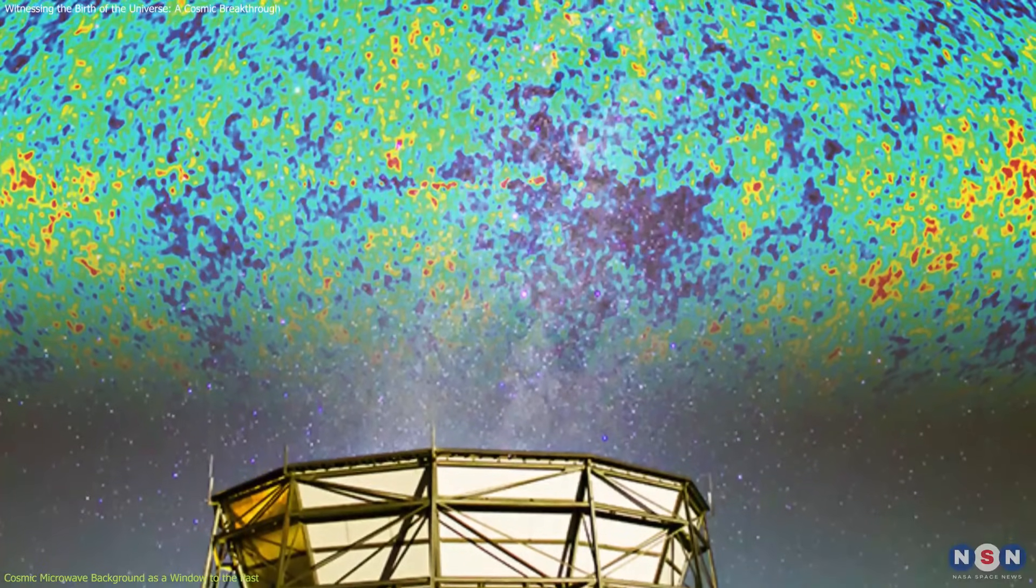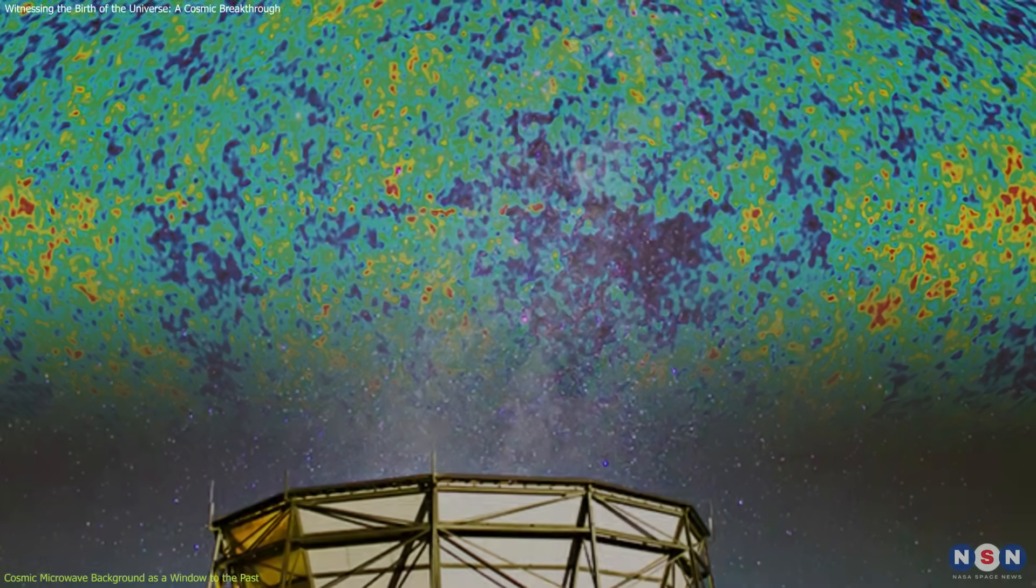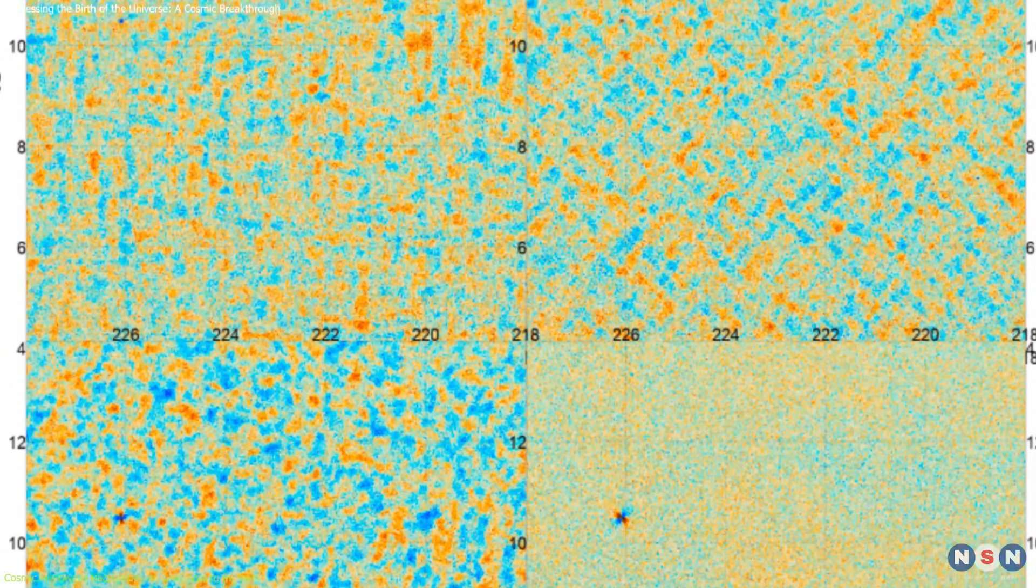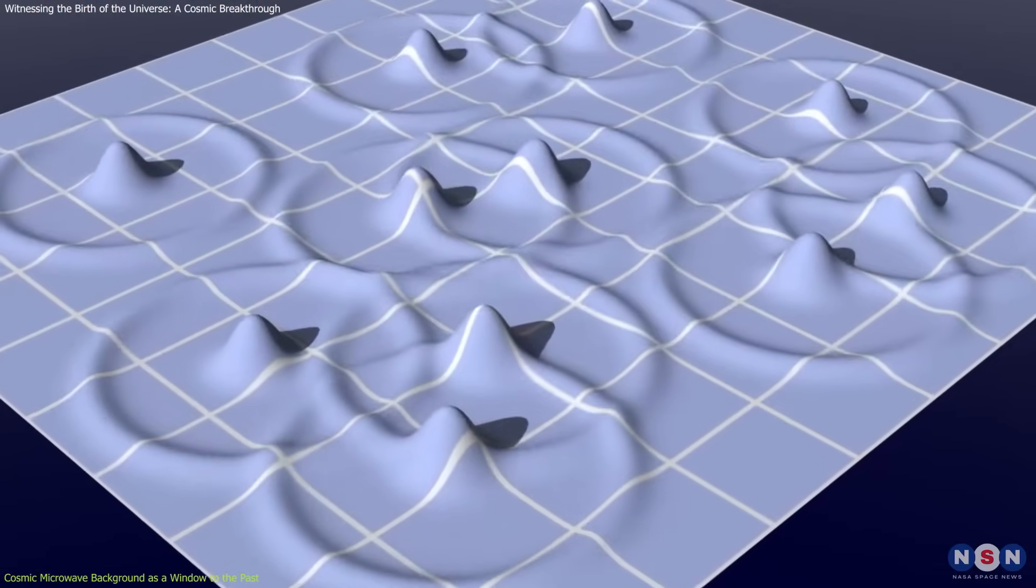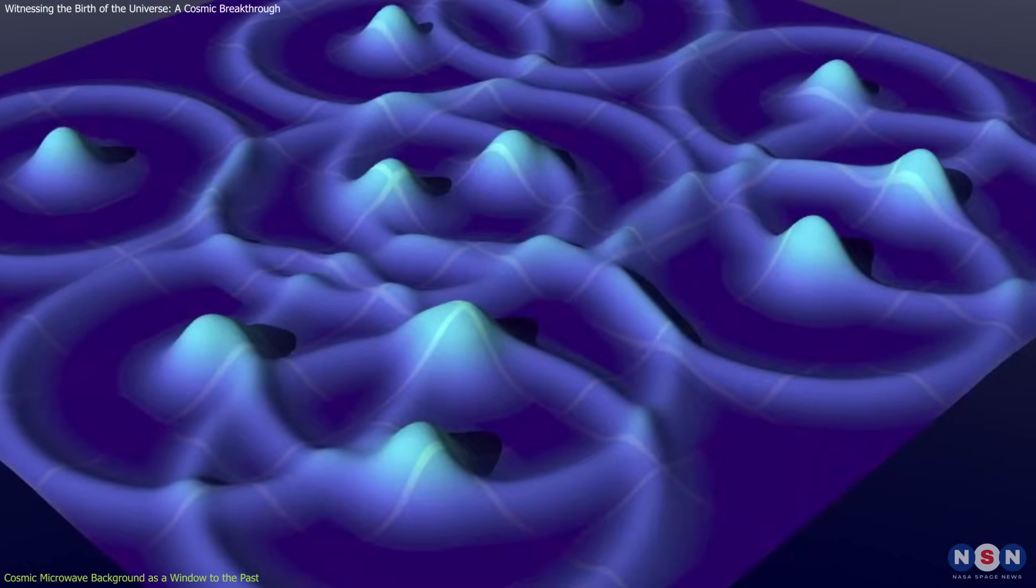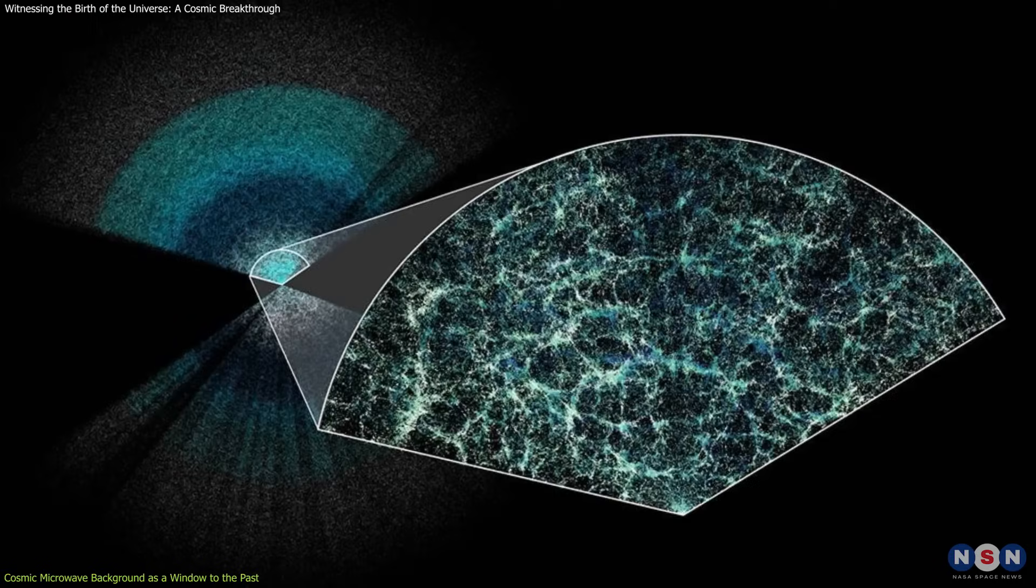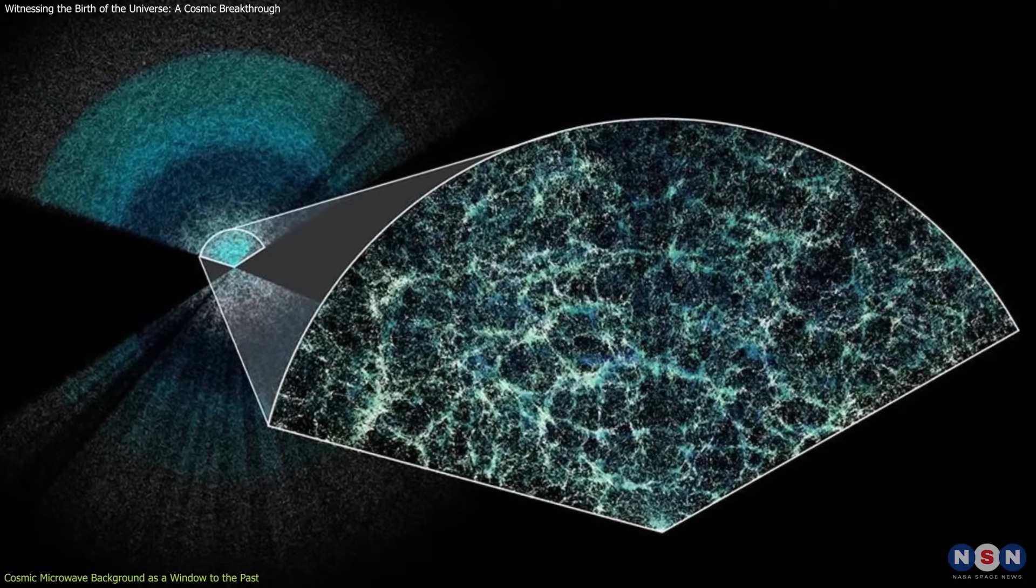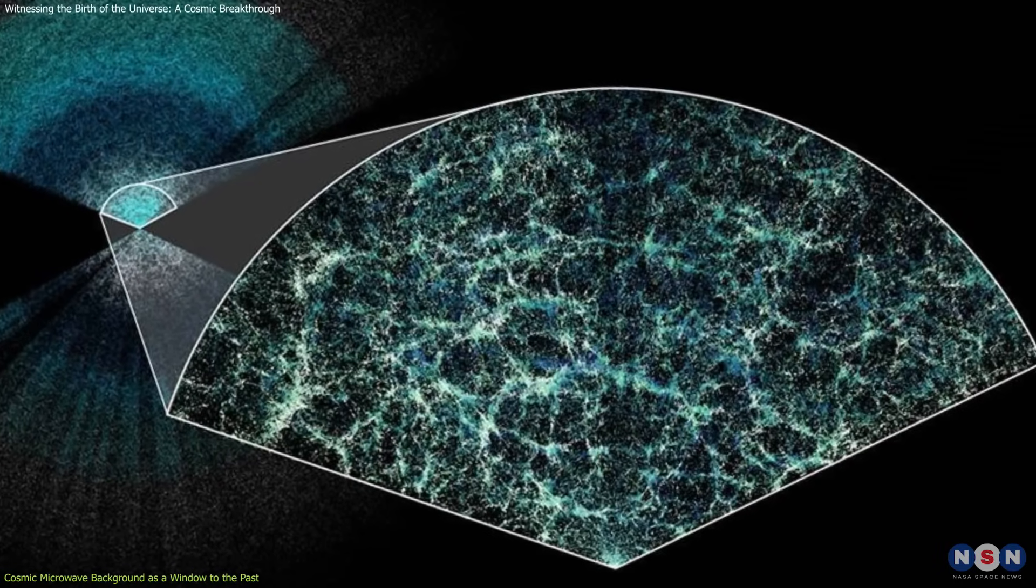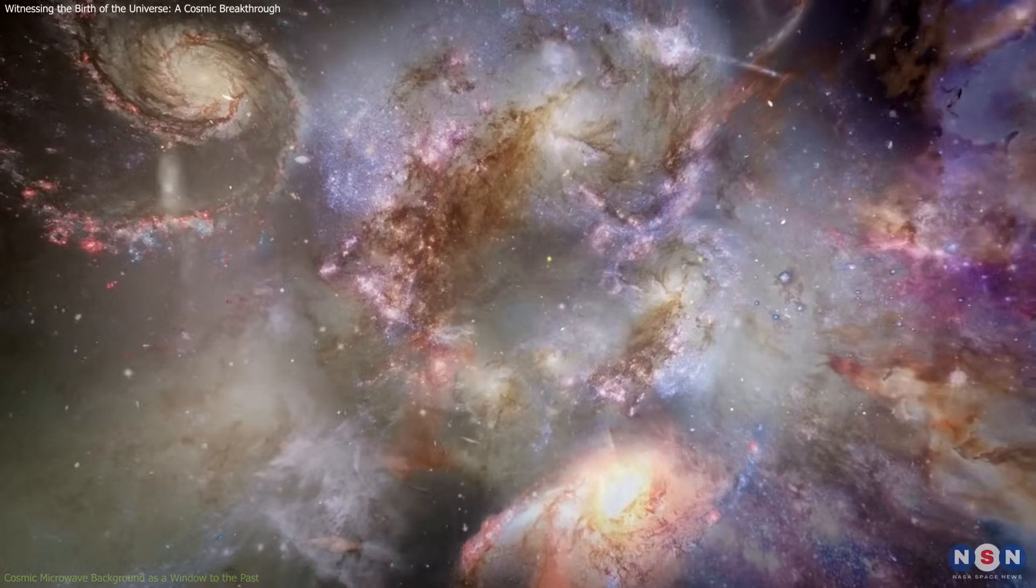One of the most exciting aspects of the ACT's work is its ability to measure acoustic oscillations in the early universe. These are essentially sound waves that propagated through the primordial plasma, leaving distinct imprints in the CMB. By studying these oscillations, scientists can better understand how matter was distributed in the early universe and how galaxies eventually formed.